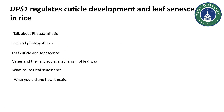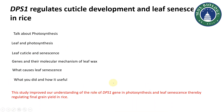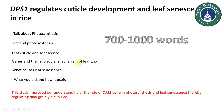You can finish your introduction with lines like: 'This study improved our understanding in the role of the DPS gene in photosynthesis and leaf senescence, thereby regulating the final grain yield in rice.' When you have written about 700 to 1000 words, that would be a complete introduction. Hope this video is helpful for you in designing your own introduction. Thank you for watching, bye bye.